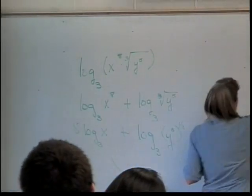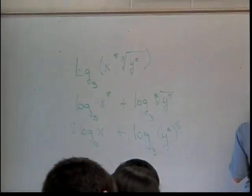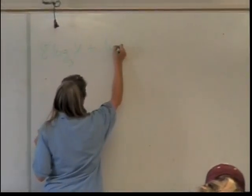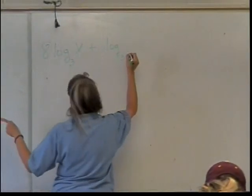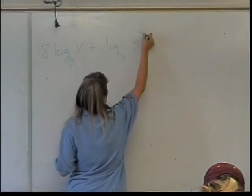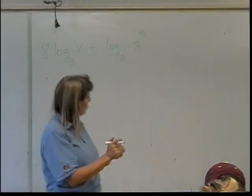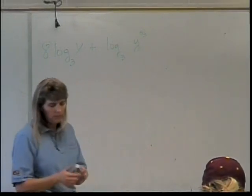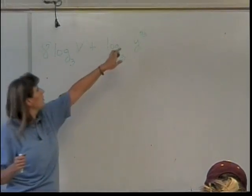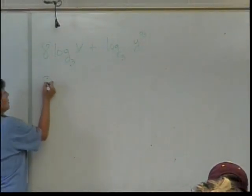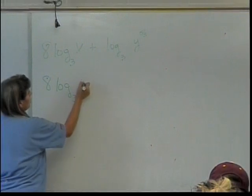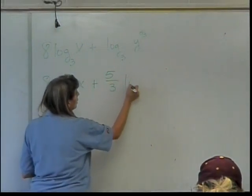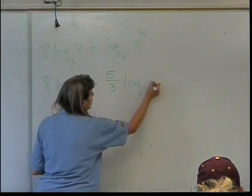So over here I have 8 log base 3 of X plus log base 3 of Y to the 5 thirds. Now that should make my life easier. So what can I do now? I can move this 5 thirds out to be in front of the logarithm. So I'll have 8 log base 3 of X plus 5 thirds log base 3 of Y.